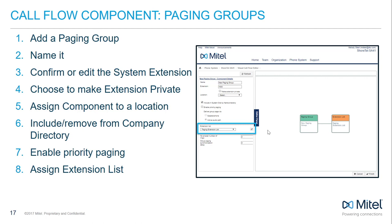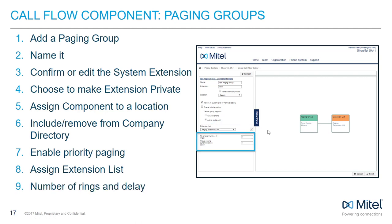Assign the extension list that will be paged when the page is placed to this paging group. No answer number of rings sets the total number of rings before the page terminates when ringing the phone of each member of the assigned extension list, allowing you to prevent pages from being forwarded to voicemail. Group paging synchronization delays specify, in seconds, how much of a delay takes place between initiating the page and when the phone broadcasts the page. Click Finish to save.